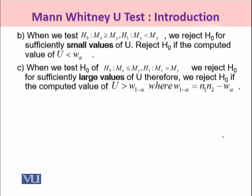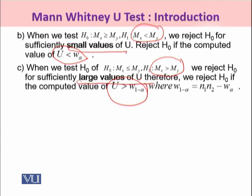For a one-tailed test of the less-than type, reject H₀ for sufficiently small values of U — that is, when U < W(α). For a one-tailed test of the greater-than type, reject H₀ for sufficiently large values of U — when U > W(1 − α), where W(1 − α) = N₁ · N₂ − W(α). Here N₁ and N₂ are the sample sizes of the first and second datasets, and W(α) is the value obtained from the Mann-Whitney U critical table.